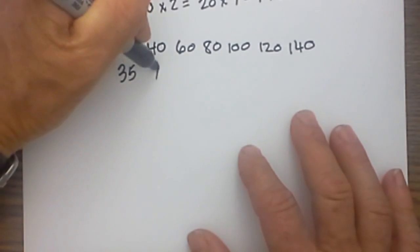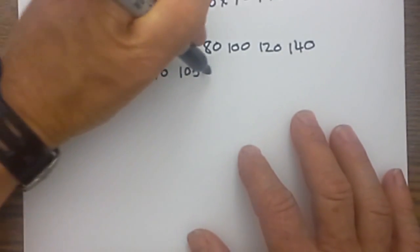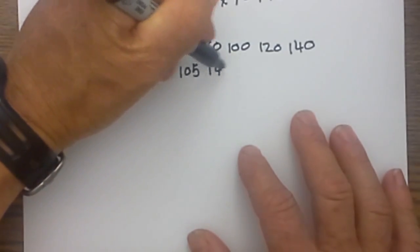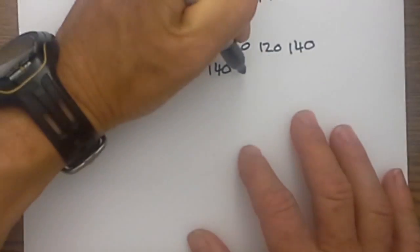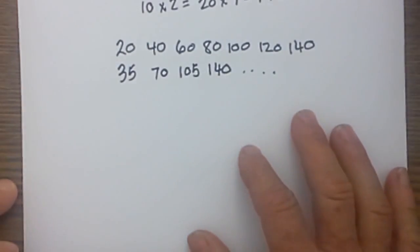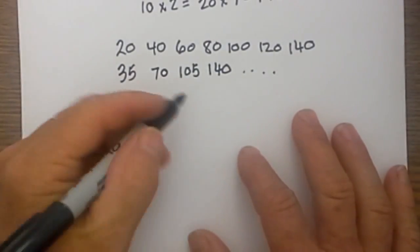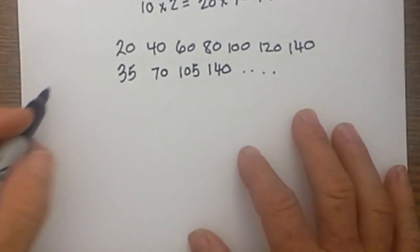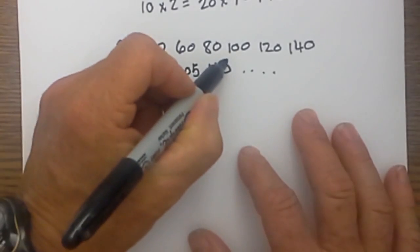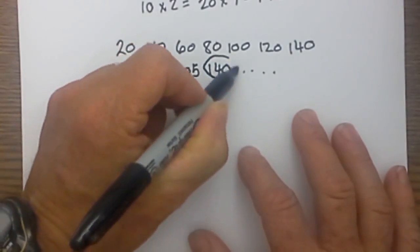I then proceed and do the same for 35: 35 times 2 is 70, times 3 is 105, times 4 is 140, etc. And then what I do is I look for a common number in both of these and in this particular instance the common number is 140.